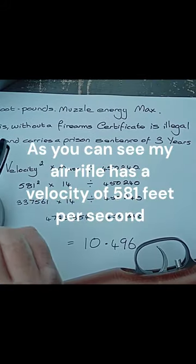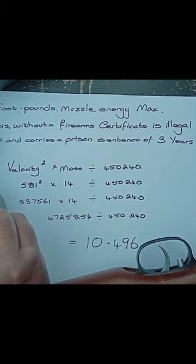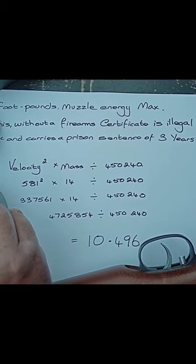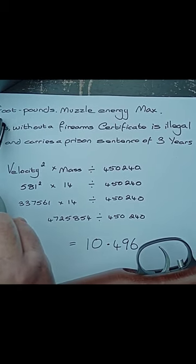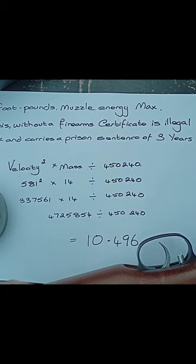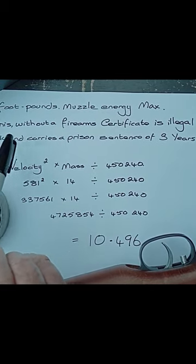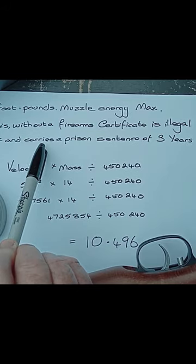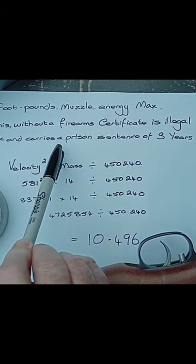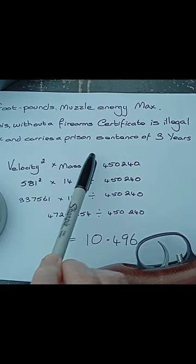So remember, the legal muzzle energy, the maximum legal muzzle energy is 12 foot pounds. If you go above that without a firearms license, then it's illegal in the UK and it carries a prison sentence of three years.